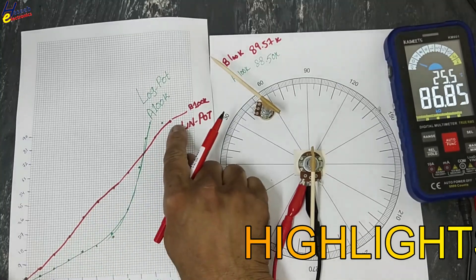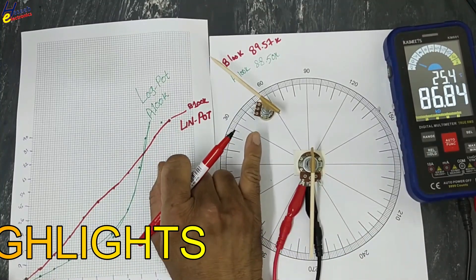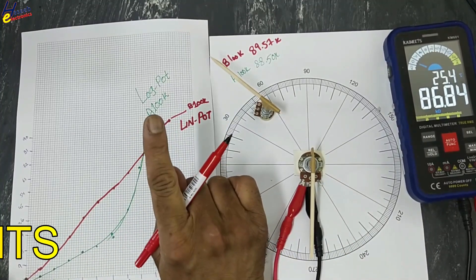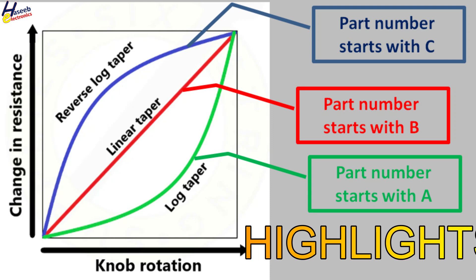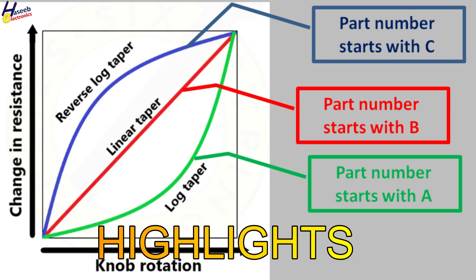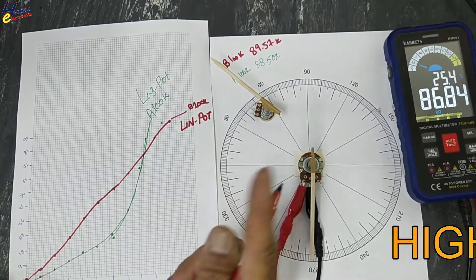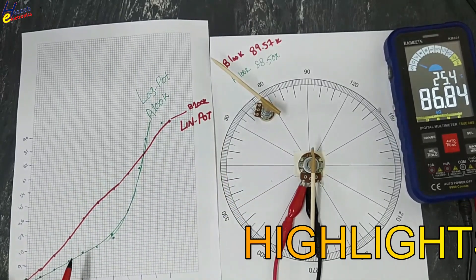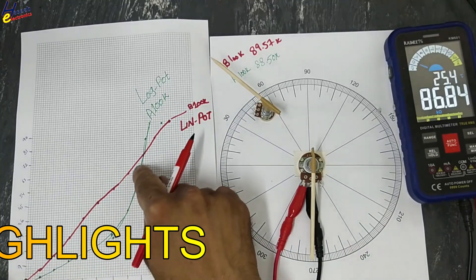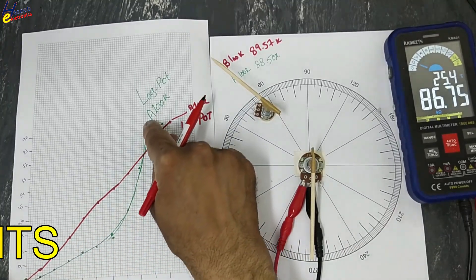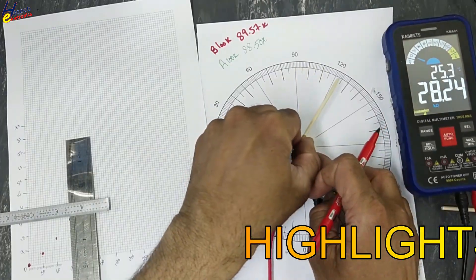This is the response of a linear potentiometer. Its part number will start with B. If the part number starts with A, the curve is like this. At 120 degrees, the reading is 35.